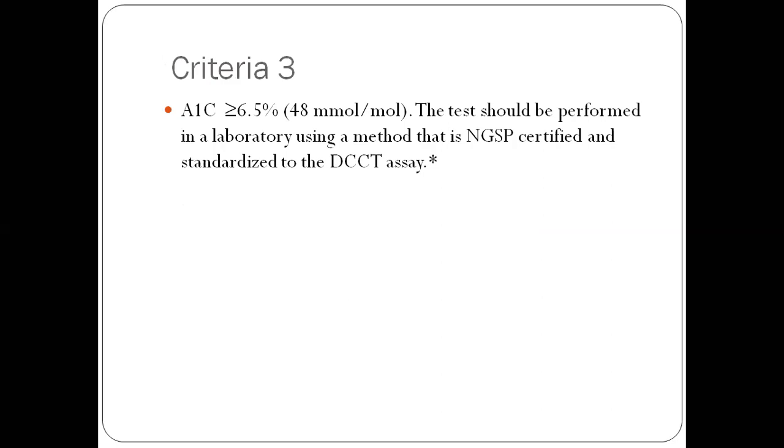The third criteria: HbA1c greater than 6.5%. The test should be performed in a laboratory using a method that is NGSP certified. NGSP stands for National Glyco-Hemoglobin Standardization Protocol and standardized to the DCCT assay. The manufacturer of the machine has to get himself NGSP certified, only then can the assay be used to diagnose diabetes. A lot of machines are not NGSP certified and therefore you can't use those A1c values to diagnose diabetes.